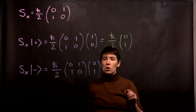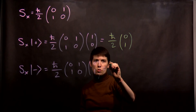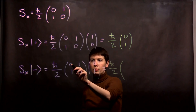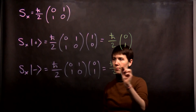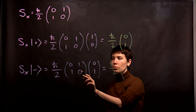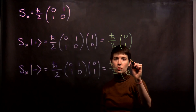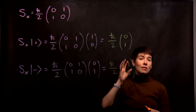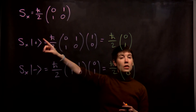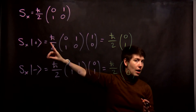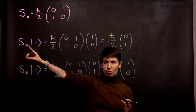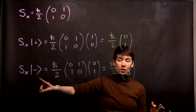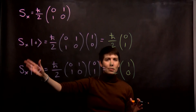What about spin down? Again, h-bar over two. Row times column: 0 times 0 is 0, plus 1 times 1 is 1. Row times column: 1 times 0 is 0, plus 0 times 1 is 0. Unsurprisingly, as you get a feeling for this, it's not an eigenvector situation. Spin up in the z direction is not an eigenvector of our x direction operator. Similarly, spin down in the z direction is also not an eigenvector of our spin measurement in the x direction.